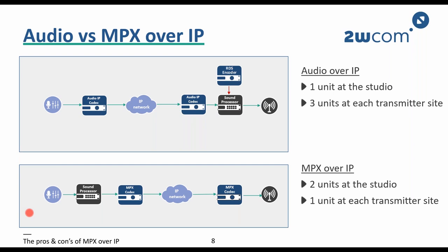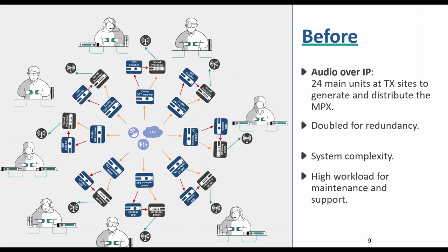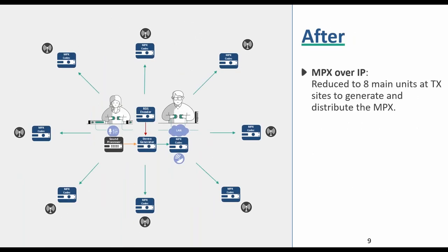Consider a typical setup for a radio station operating 8 transmitter sites. The radio program and RDS data are distributed as audio over IP to all 8 sites. Each site has an audio over IP codec, an RDS encoder, and a fairly expensive sound processor with integrated stereo generator. Any change in sound processing has to be performed at every single transmitter site. With MPX over IP, distributing looks amazingly simple — sound processing and RDS encoding are performed at the studio, and at each transmitter site only one MPX over IP codec needs to be installed, as it carries MPX already pre-processed at the studio.